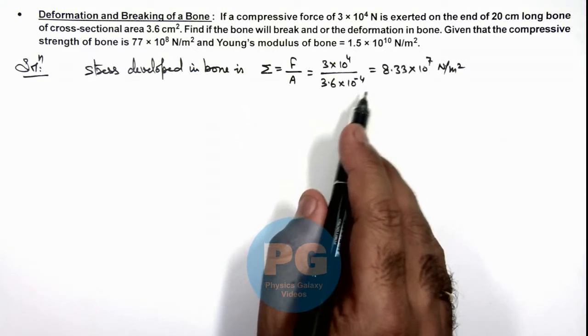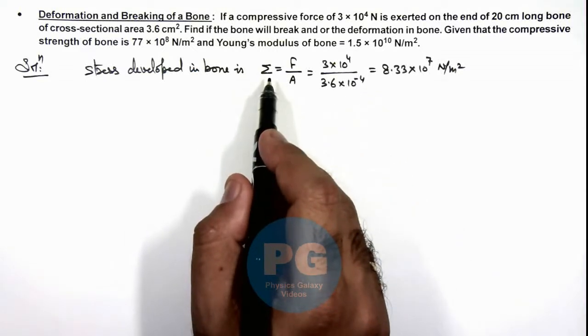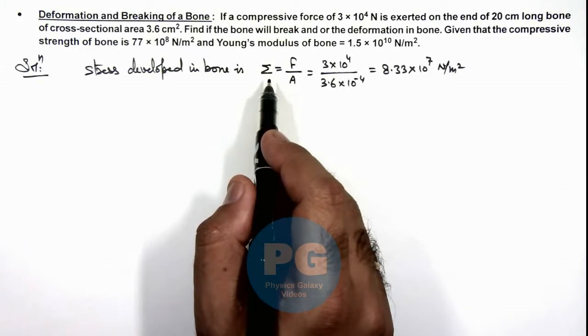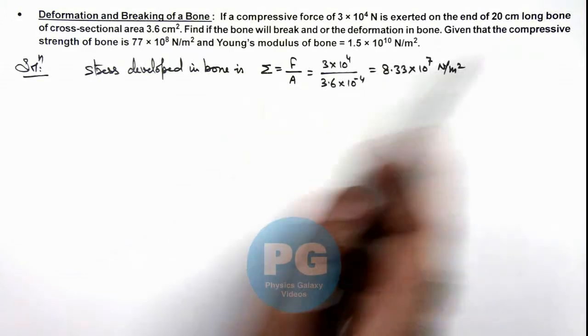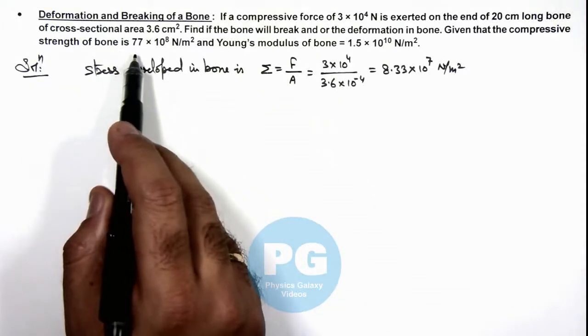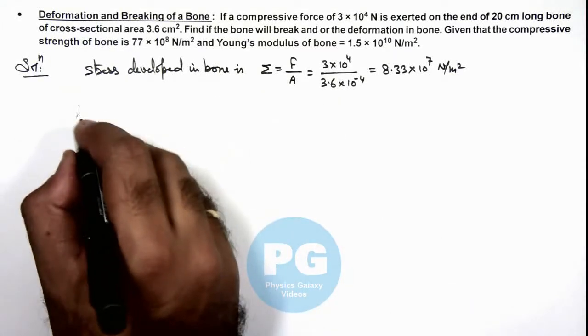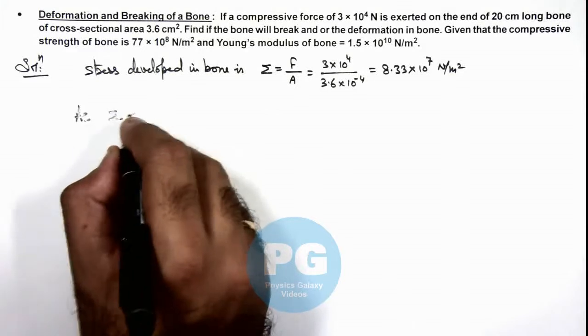Here we can write if the stress is less than the compressive strength of bone, then it will not break. We are given that the compressive strength of bone is given by this value, so here we can write as sigma is less than compressive strength.